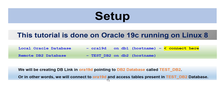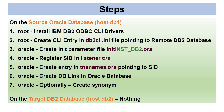We will connect to ora19d and access tables present in the test_db2 database. The connection will be made to the Oracle database, and from there we will access the tables present in the DB2 database — so the DB link points from the Oracle database to the DB2 database.